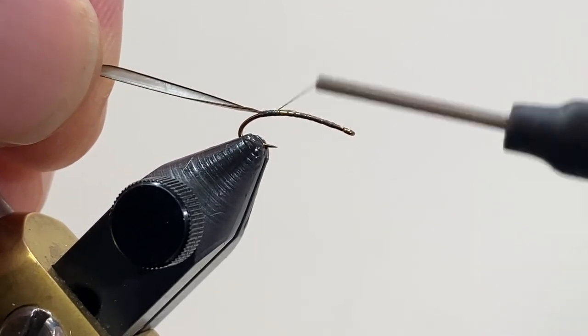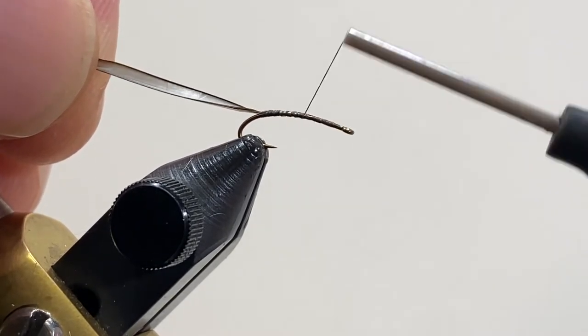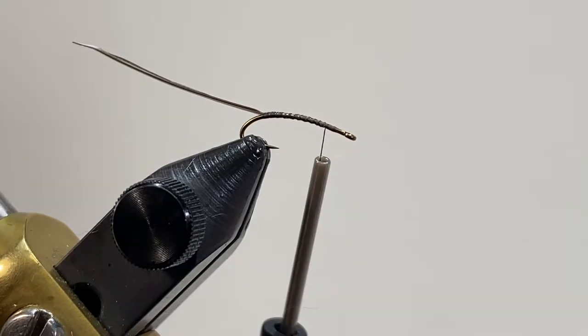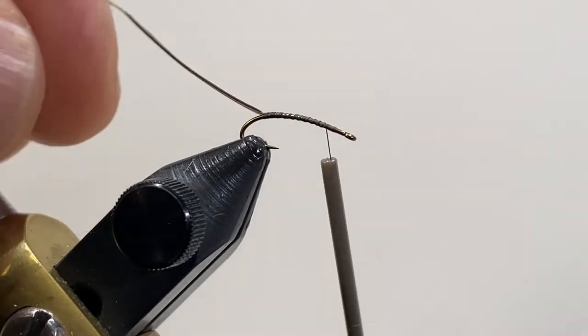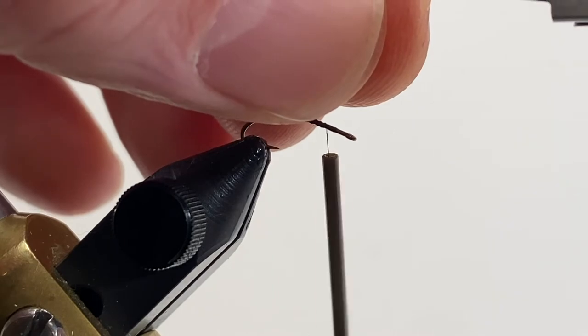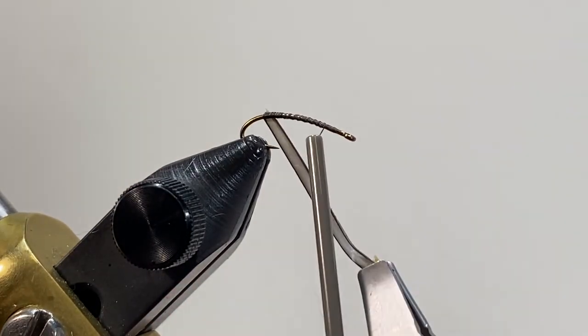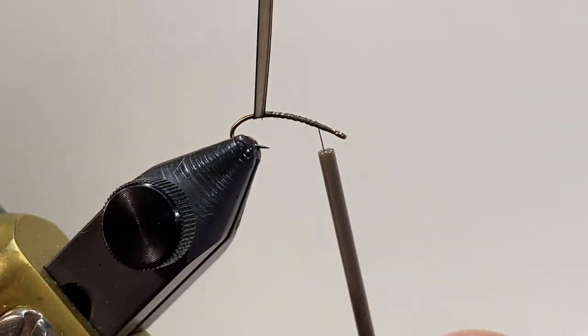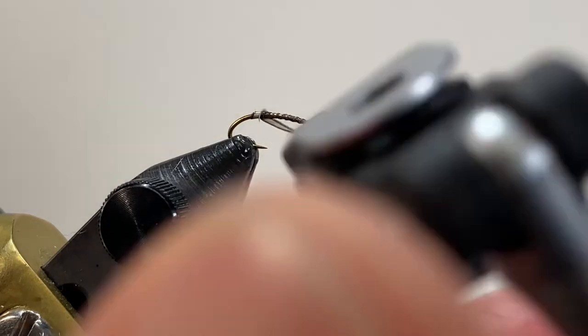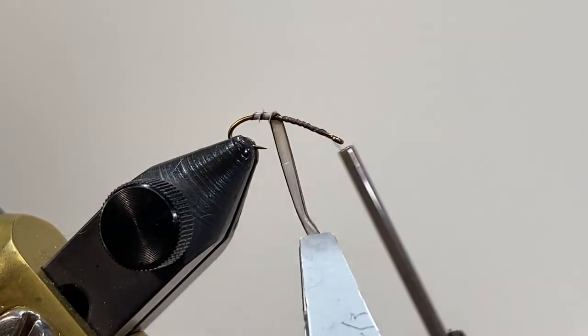We'll secure the Biot to the shank and then bring our thread about three-quarters of the way up the shank. Using hackle pliers, we'll grab the Biot and we'll begin to wrap this up the shank of the hook.